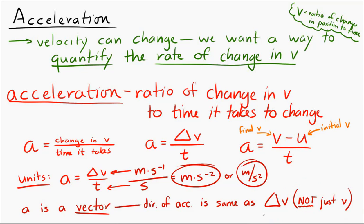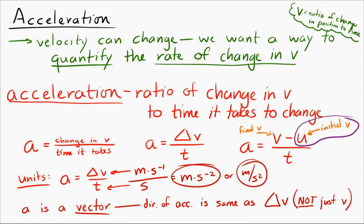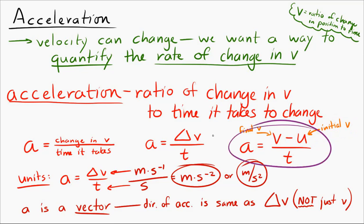A common symbol for final velocity is v, and a common symbol for initial velocity is u. So we can write acceleration as equal to the change in velocity — final velocity minus initial velocity, or v minus u — divided by the time that it takes, t.